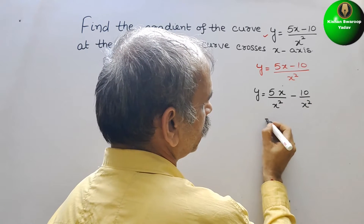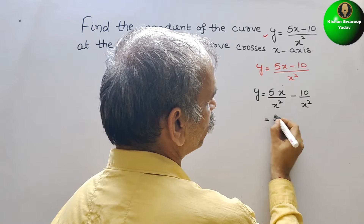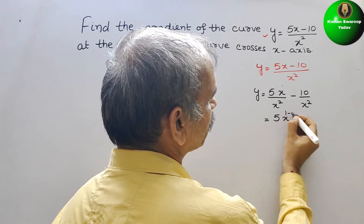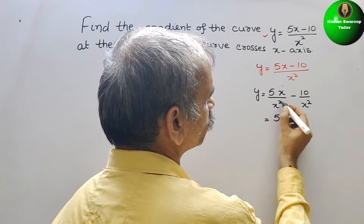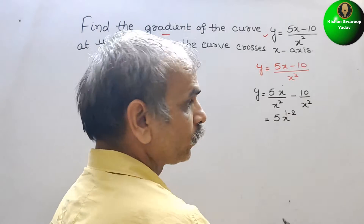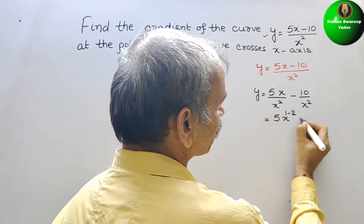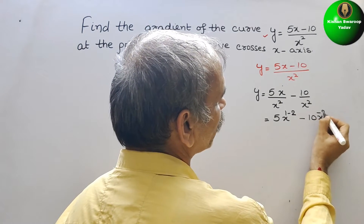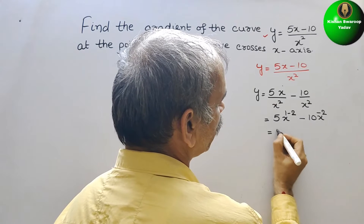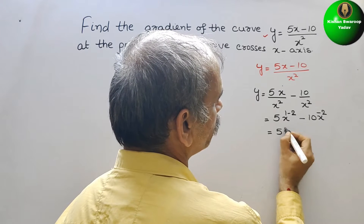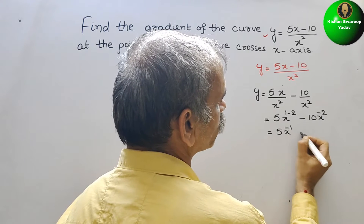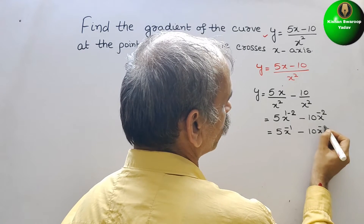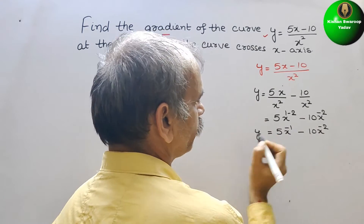Now solve this. If you solve this, you will get 5x to the power of 1 minus 2, which is minus 1, and minus 10 x to the power of minus 2. Therefore we will get y equals 5x to the power of minus 1 minus 10x to the power of minus 2.